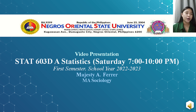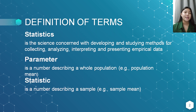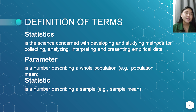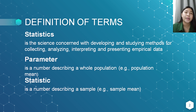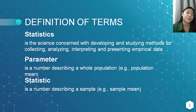Now let's move on to the second slide. Here we have the definitions of terms — at least three: statistics, parameter, and statistic. So, statistics is the science concerned with developing and studying methods for collecting, analyzing, interpreting, and presenting empirical data. When we say empirical data, these are information found through research.